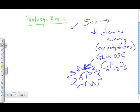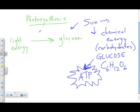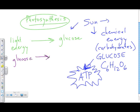So light energy needs to be converted to glucose — this is what we call photosynthesis. Then ultimately, we take that glucose and convert it, transferring that energy from glucose to ATP in a process called cellular respiration.